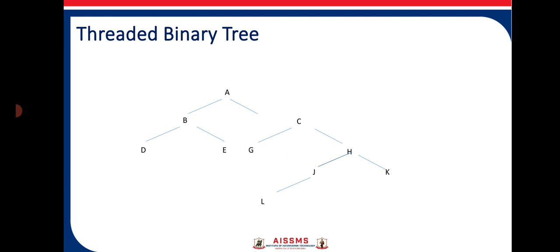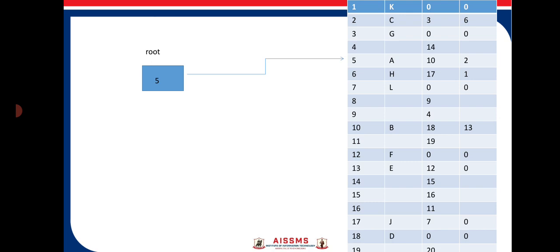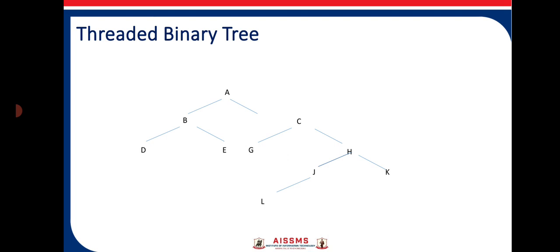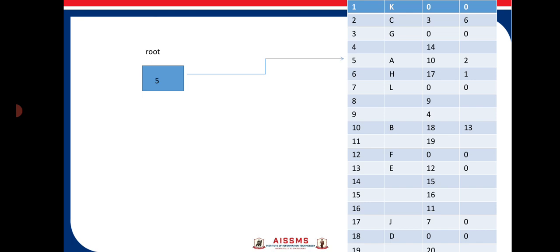Consider an example with root node A and nodes B, C, E, G, H, J, K, and L. In a table representation, node A is located at index 5, showing its next pointer at index 10 and previous pointer at index 2. At location 10 we have node B, and at location 2 we have node C. With this table representation using in-order predecessor and in-order successor pointers, we can map and identify how the threaded binary tree works — wherever an element is located can be identified using this table.